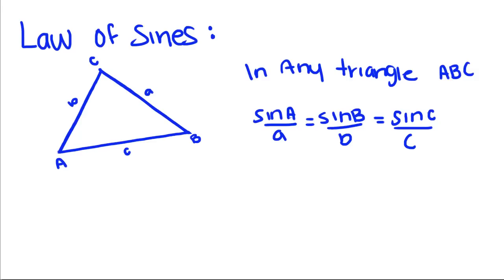So in any triangle ABC, sine A over A, so sine of this angle over this side is equal to sine B over this side equals sine C of this angle over this side.